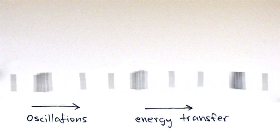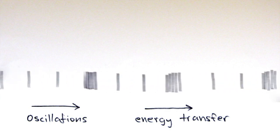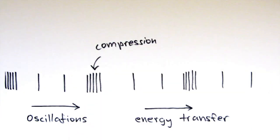These waves show areas of compression and rarefaction. The areas of compression are where the parts of the wave are closer together, while the areas of rarefaction are where they are far apart.